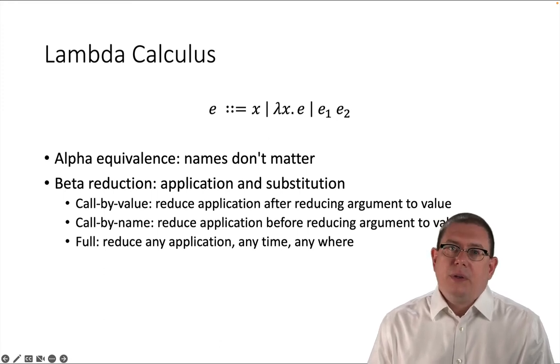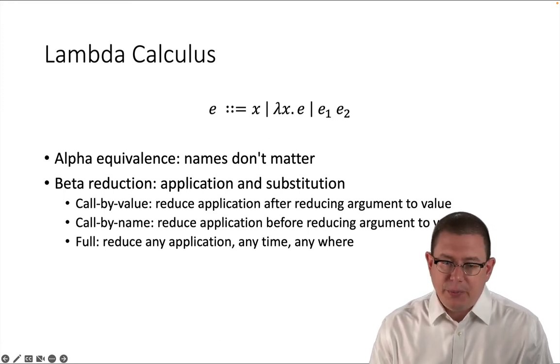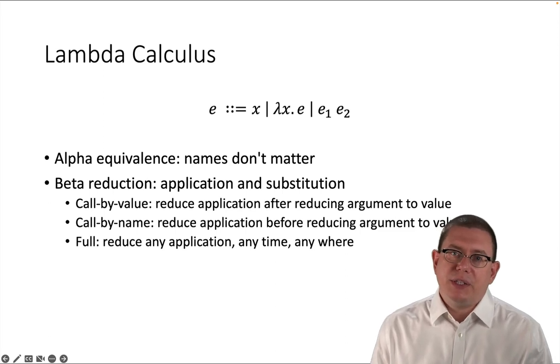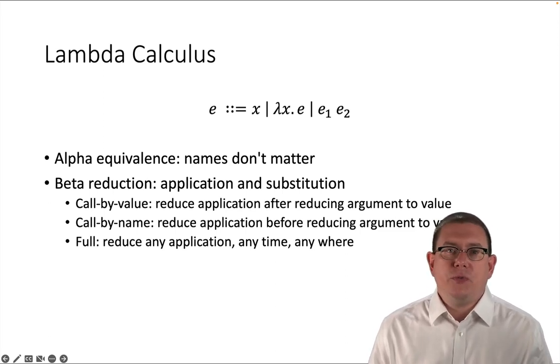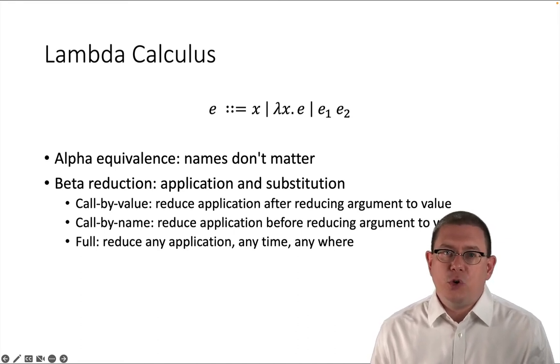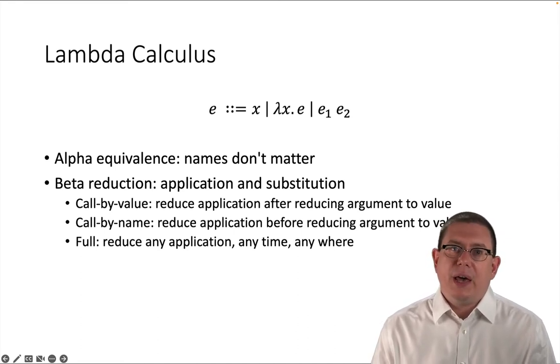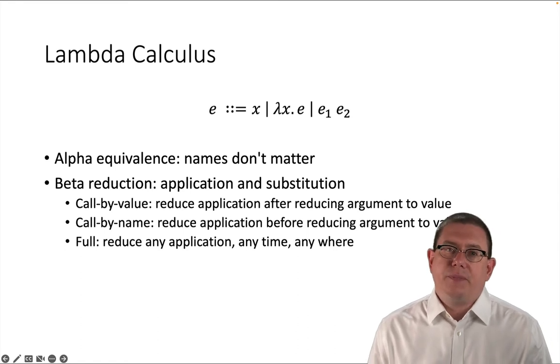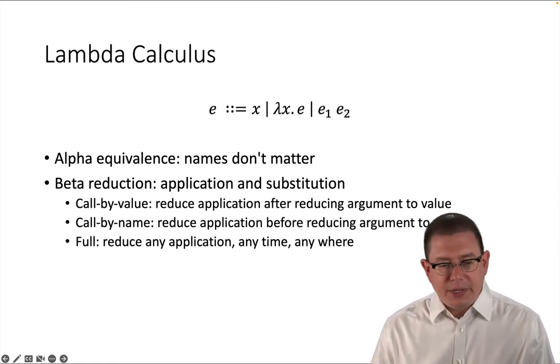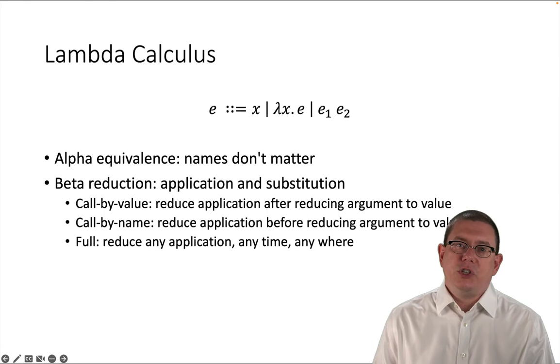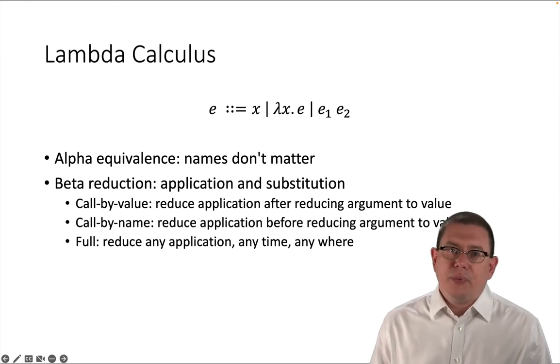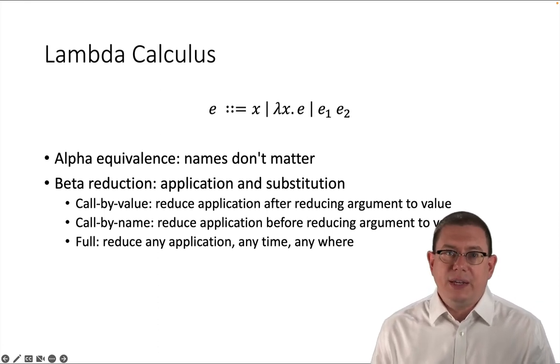Okay, the other thing we need to know about is beta reduction. Beta reduction is the computational model, if you will, for the Lambda Calculus. It is how you do function application and substitute the value being passed in for an input as part of evaluating a function's body. Okay, there's a lot we could talk about with beta reduction as well, but just think about it in that way. It's like applying a function to its input to get an output.